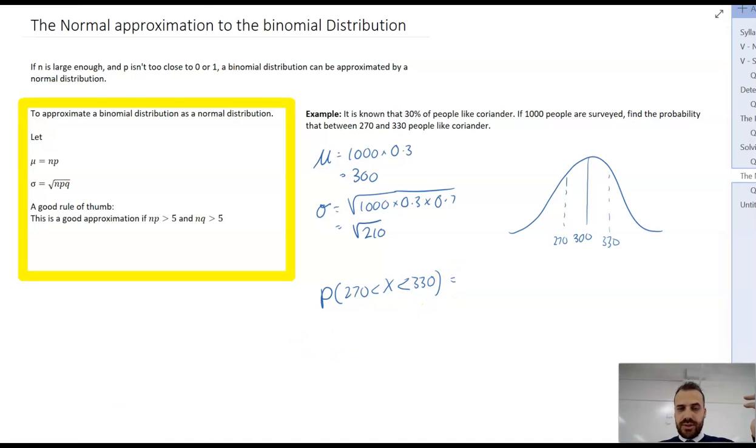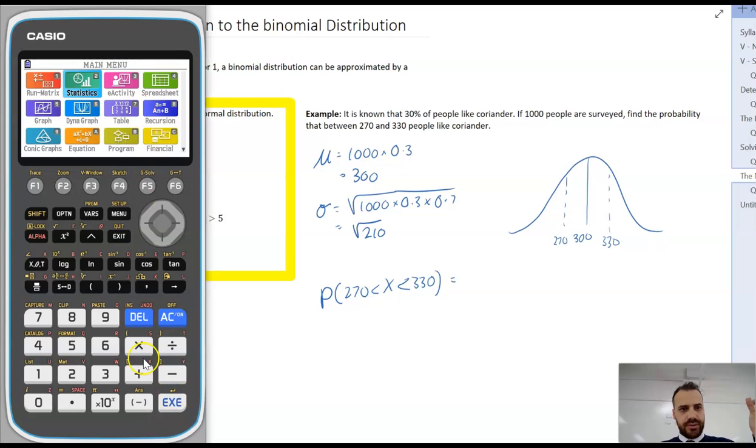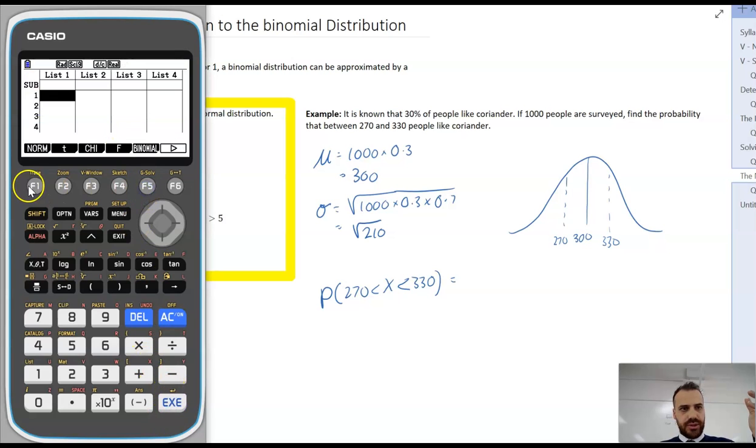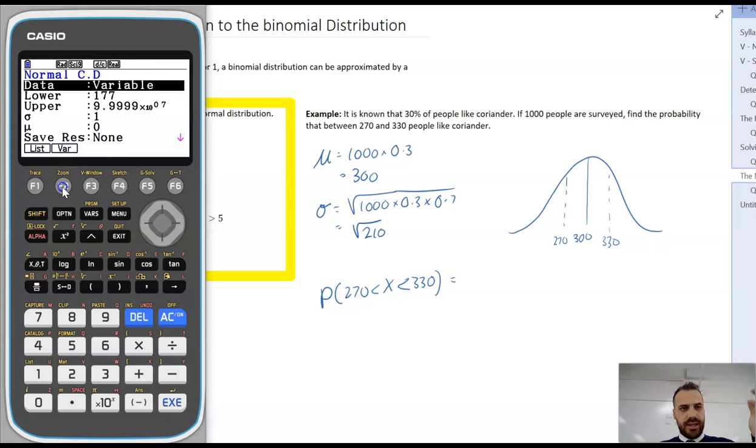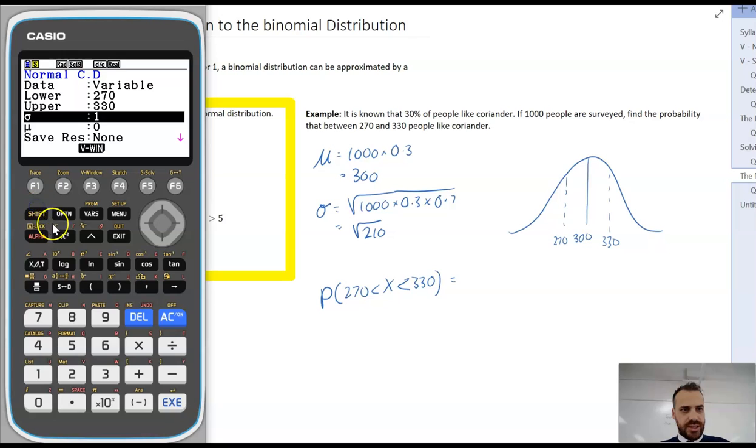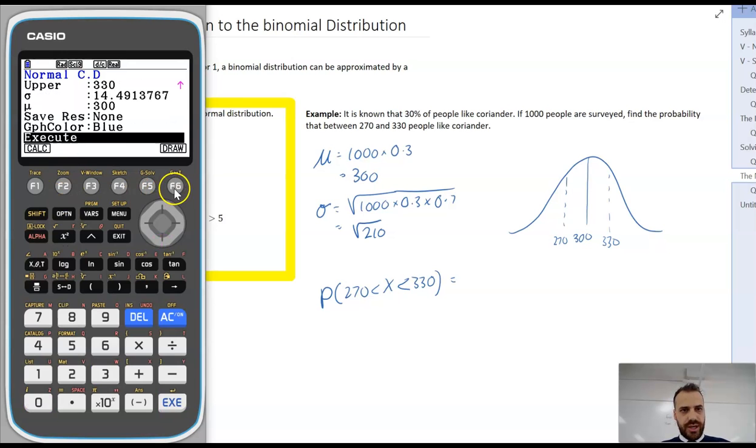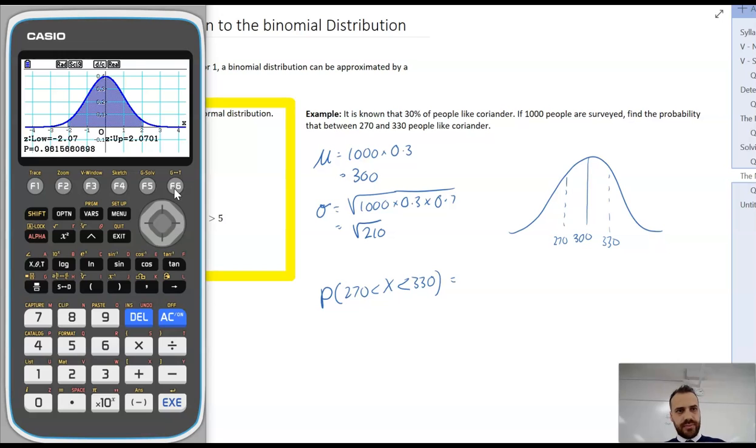And then I just get out my calculator and do some stats mode, go into stats mode, distribution, normal distribution, NCD. Now I'm going to need a lower value of 270, an upper value of 330, and a standard deviation, the square root of 210, and a mean of 300. And I'll draw that. And it looks like the probability is 0.9616.